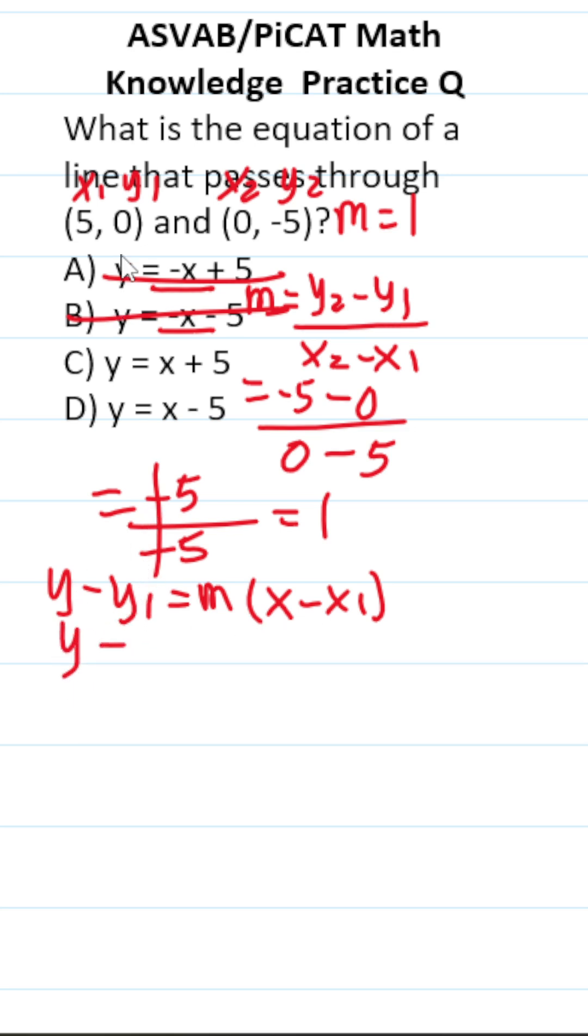This becomes y minus—what is y1? It's right here, it's 0. What is m? We calculated it. It's 1 times x minus x1, which is right here, it's 5.